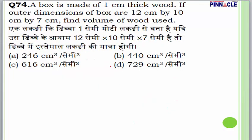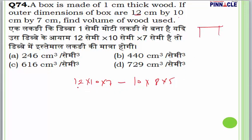Question 74: A box is made of 1 cm thick wood with outer dimensions 12×10×7 cm. Inner dimensions = 10×8×5 cm. Volume of wood = outer volume − inner volume = 840 − 400 = 440 cm³. Answer is B.